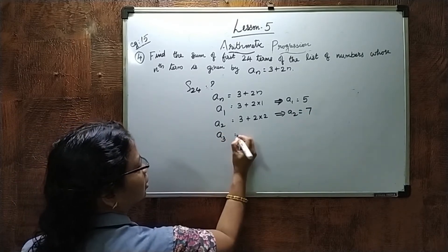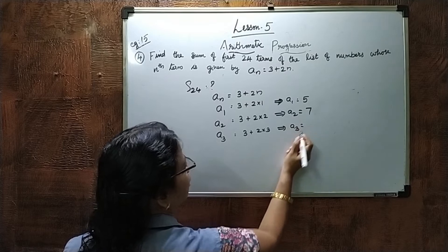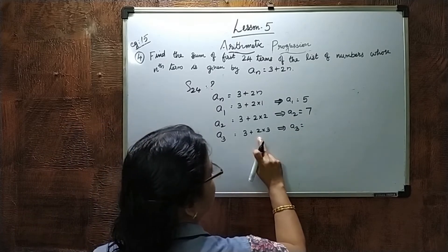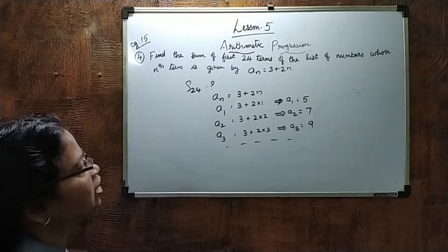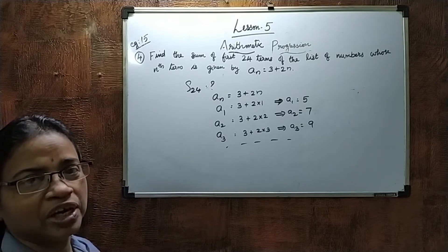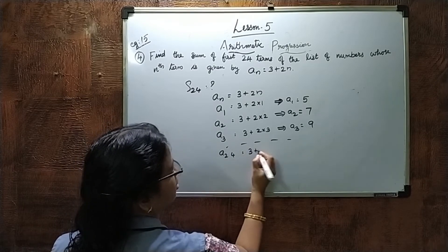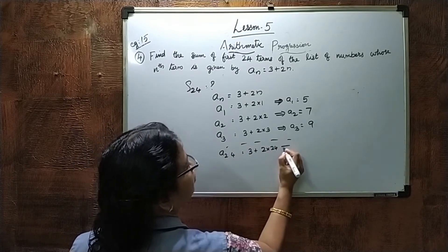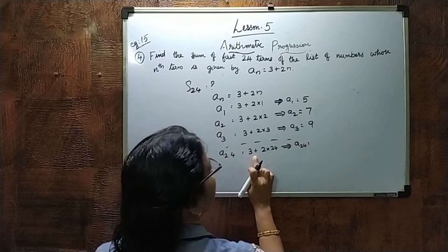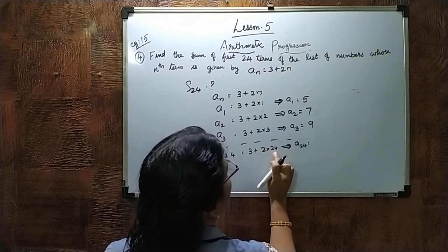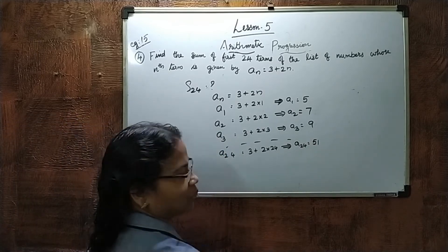A3 equals 3 plus 2 into 3, which is 3 plus 6, equals 9. We want the 24th term as the last term. A24 equals 3 plus 2 into 24, which is 3 plus 48, equals 51. So A24 is the last term.